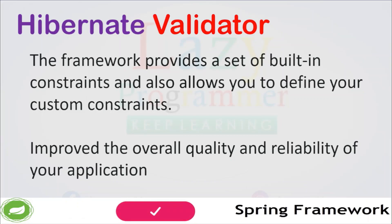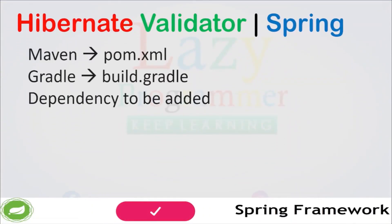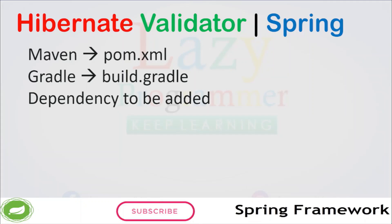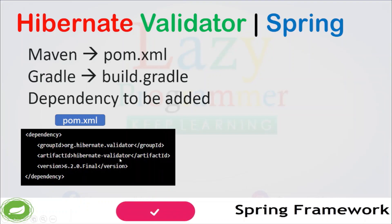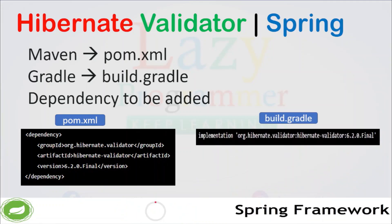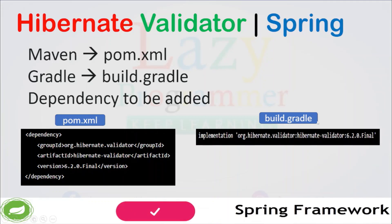Let's see how we can add the Hibernate Validator dependency to your Spring application. There are two build tools we'll mainly be using: Maven and Gradle. For Maven we have pom.xml and for Gradle we have build.gradle. In pom.xml we need to add a dependency tag with group ID org.hibernate.validator, artifact ID hibernate-validator, and then provide the version. In build.gradle we just need to add an implementation entry with those same three details but in a different format, since build.gradle is not an XML file.